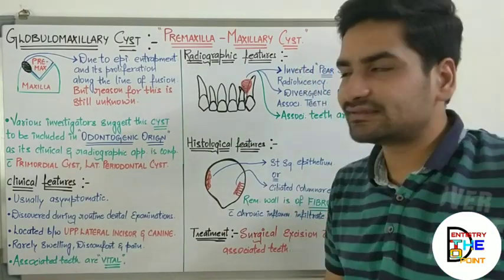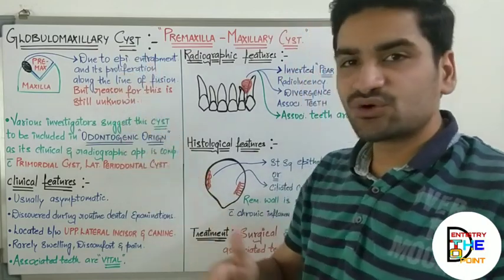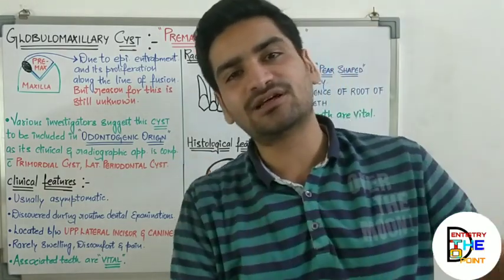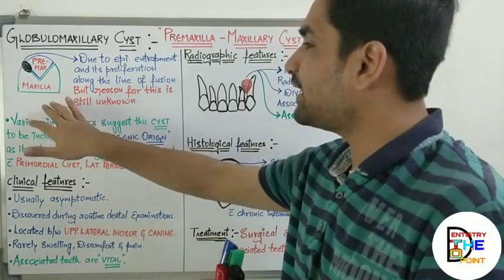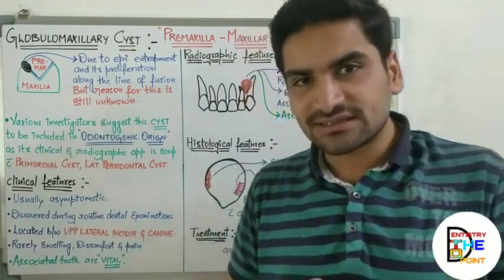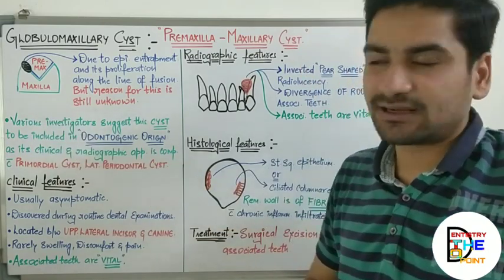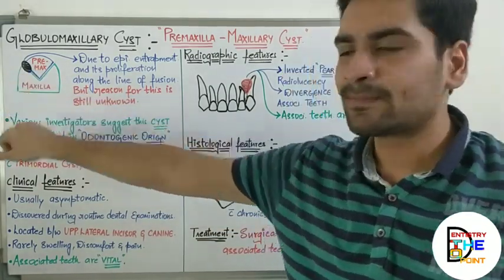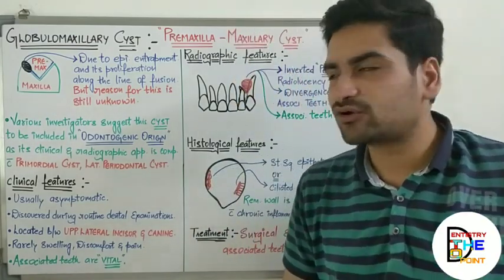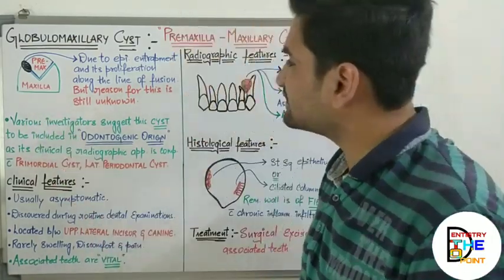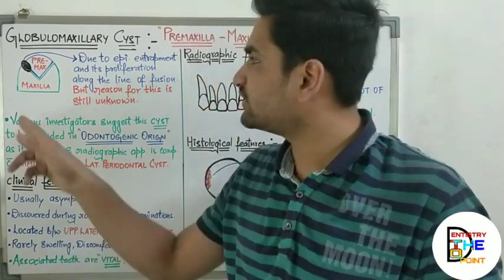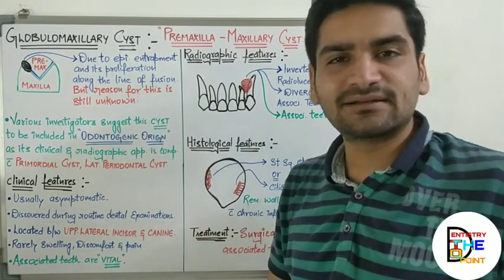The globulomaxillary cyst is due to epithelial entrapment and proliferation, which leads to the formation of cysts. The epithelium is entrapped at fusion lines, because initially it is considered a fissural cyst. The fissures are between the premaxilla and maxilla, and these fusion lines lead to the globulomaxillary cyst. However, the exact reason for epithelial entrapment in between the fissures is still not clear.